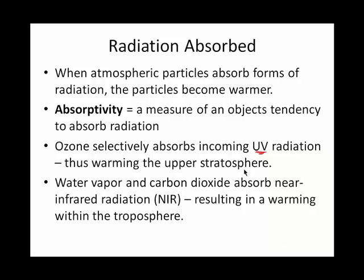Another specific example: in the Earth's atmosphere, two variable gases are H2O vapor — water gas molecules — and carbon dioxide. They vary from location to location and day to day. These gas particles will interact specifically with infrared, or IR, radiation, which is a wavelength a little bit longer than the color red. So again, a particular particle interacts with a particular wavelength coming from the sun, and as it interacts, it gets warmer.